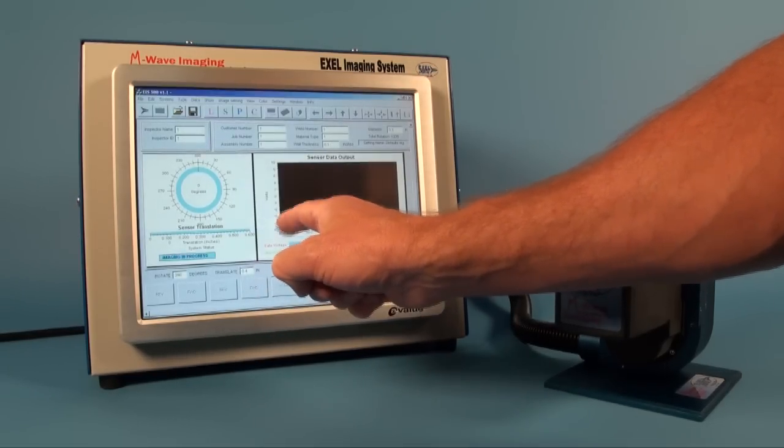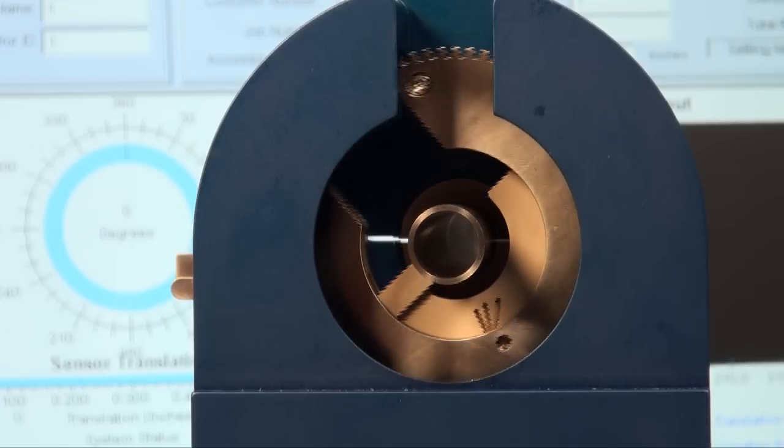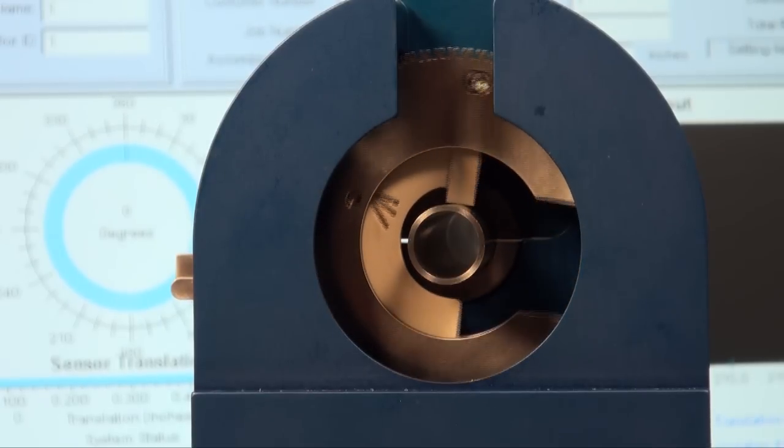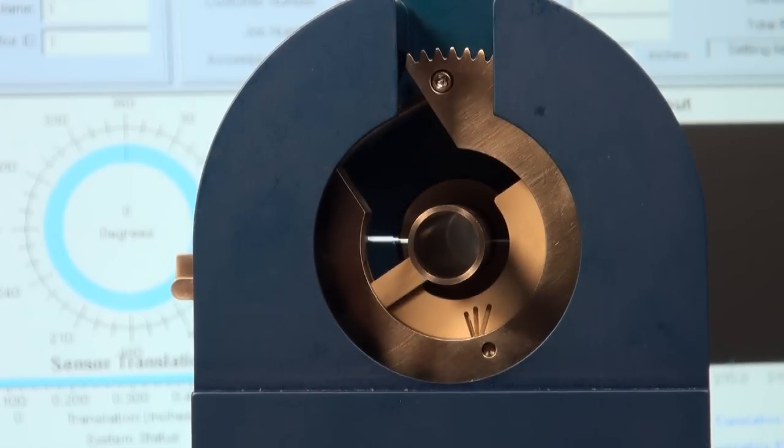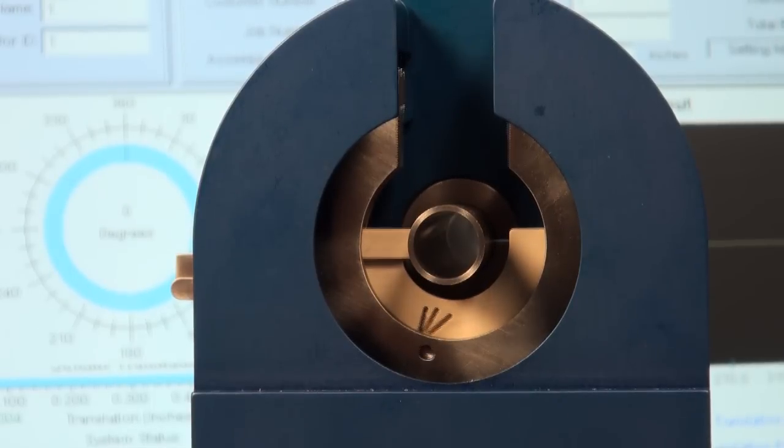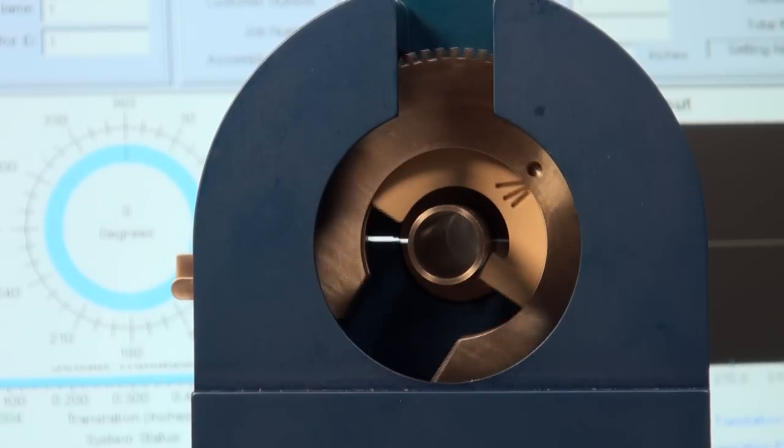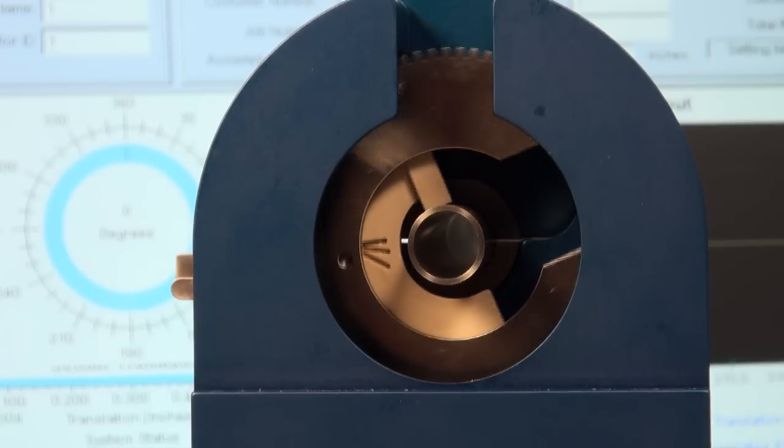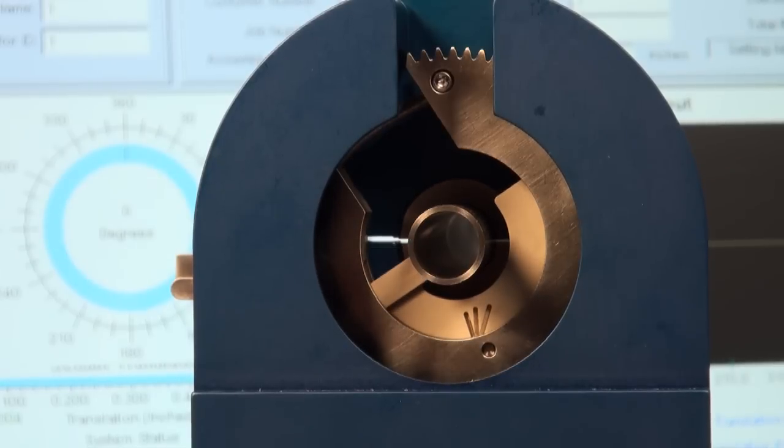Press the image button following the prompts and the system begins to scan. The system raster scans by collecting data as it rotates. With each successive rotation, the sensor is indexed across until the entire area of interest is imaged. This usually just takes a few minutes.